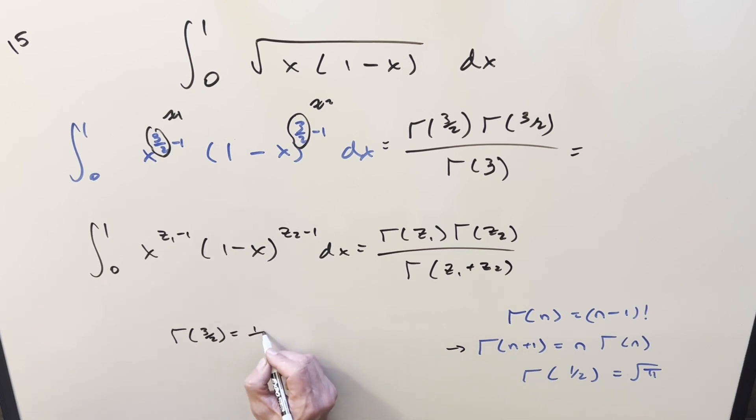But so using this, we reduce this by 1, we get 1 half gamma 1 half. But then we can go to this formula, and just to save time, I like to memorize this value. Gamma 1 half is square root of pi. So what we get here is square root of pi over 2.